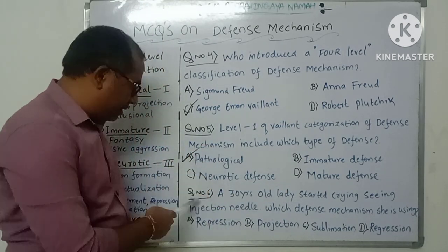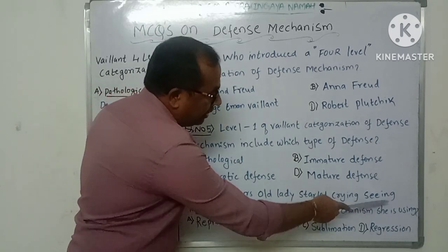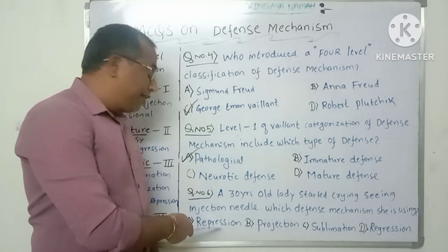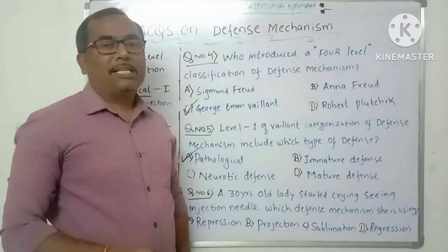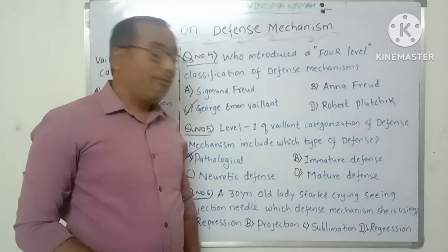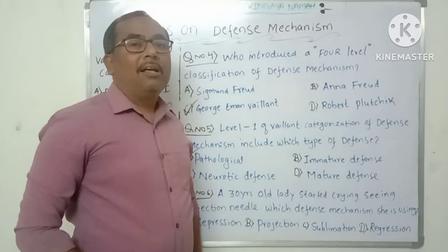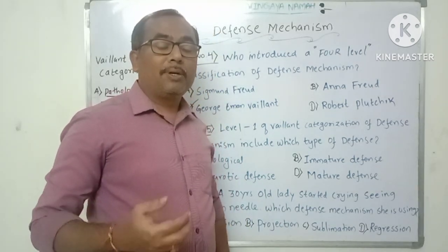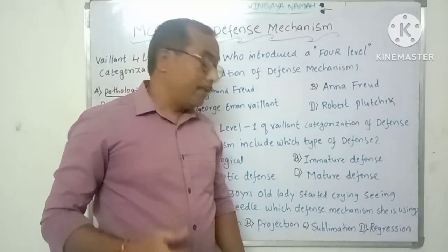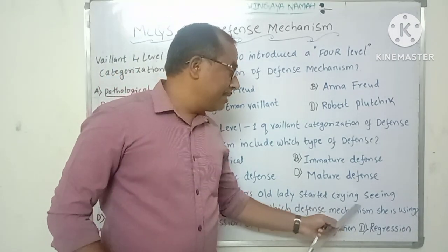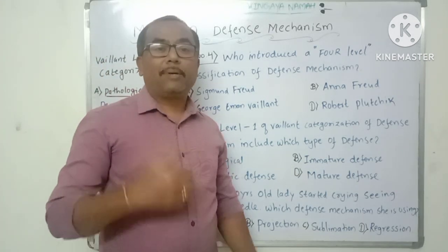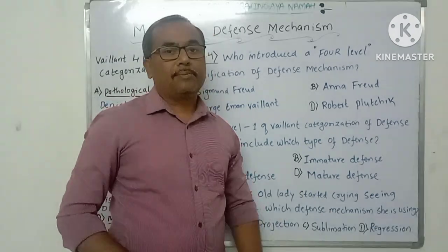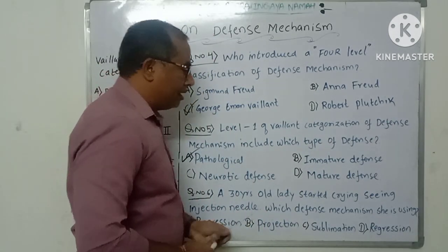Question number six: A 30-year-old lady started crying upon seeing an injection needle — which defense mechanism is she using? Repression means involuntarily forgetting a stressful situation, so that is not the right answer. Projection means blaming others for one's own faults — also not correct. Sublimation means channeling frustration and anger into a socially acceptable manner — also not correct. Regression means whenever a person faces an anxiety-producing situation, he goes back to a previous developmental stage. The 30-year-old lady is an adult but started crying like a child when she saw the injection needle, going back to childish behavior. So the correct answer is regression.